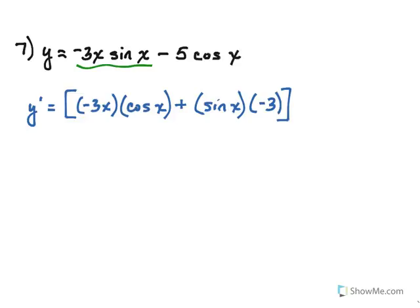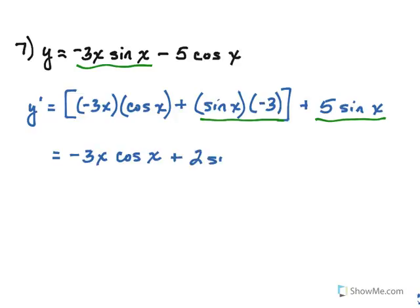So then we have the derivative of negative 5 cosine of x. Remember, derivative of cosine is going to be negative sine, so that's going to make this a positive 5 now. So if we start simplifying, notice we'll be able to simplify these sine terms back here. So in the front, we have negative 3x cosine of x. We can combine the sine terms to be positive 2 sine of x.